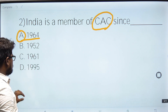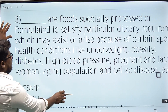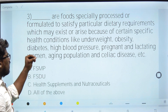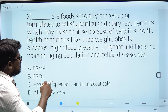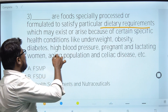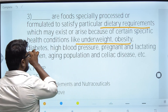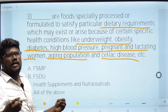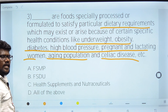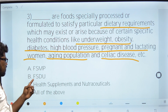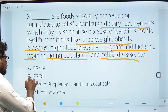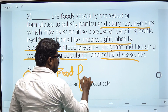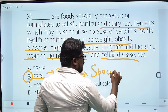Third question: Regarding dietary requirements for conditions like underweight, obesity, diabetes, high blood pressure, pregnant and lactating women, aging population, and geriatric diseases — the options are FSMB, FSDU, Health Supplements and Nutraceuticals, or option D: all of the above. The correct answer is option B — FSDU: Food for Special Dietary Uses.